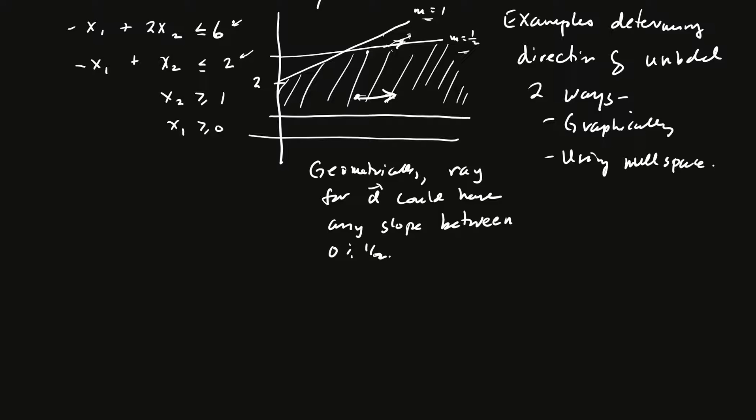If you get any bigger than 1 half, then it's not going to be a direction of unboundedness anymore because it would jump out of this region up at the top here. So that's how we would do this geometrically. By the way, maybe I'll stop here for a second and say, how would I find the full vector D using this? Because remember that the vector D is not in R2. Our direction of unboundedness is not in R2.